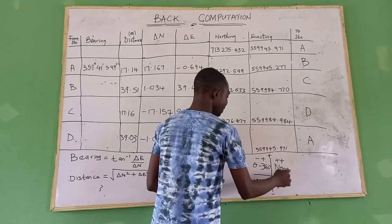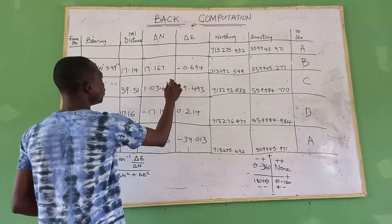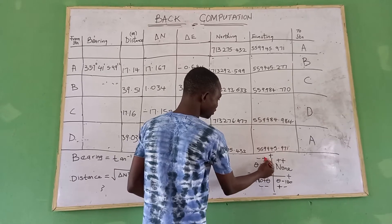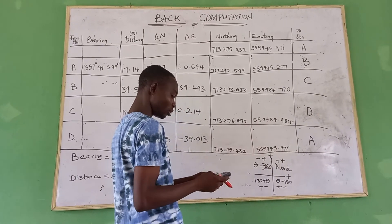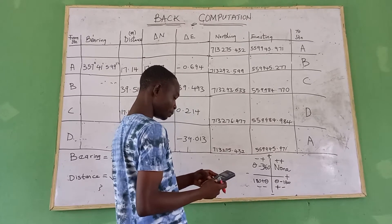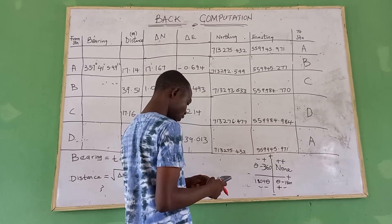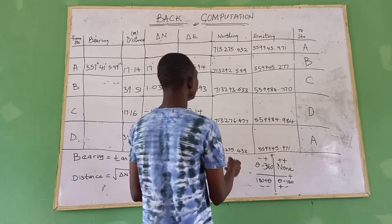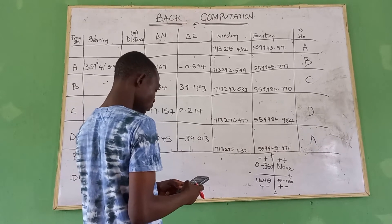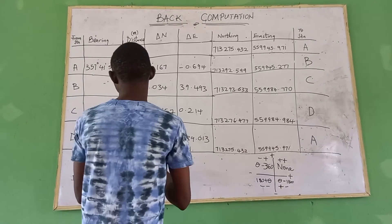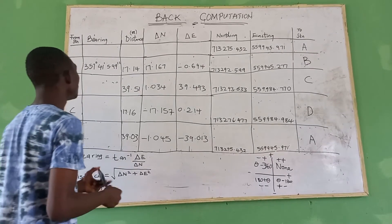Now I have negative and positive signs. Looking at the quadrant diagram, negative-positive locates us in the fourth quadrant. So we take 360 minus the value we obtained, which gave us 357 degrees, 61 minutes, 5.99 seconds. That is how we obtain the bearing for station A.